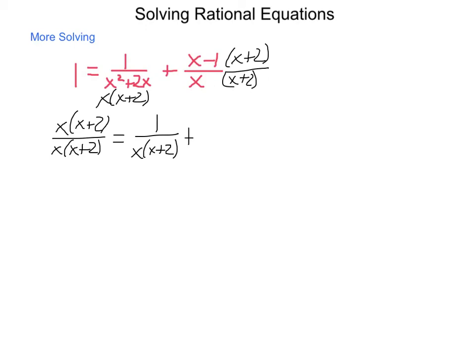So we're adding (x-1)(x+2) divided by x(x+2). Now that they all have the same denominator, we're going to ignore it and just solve our numerators.